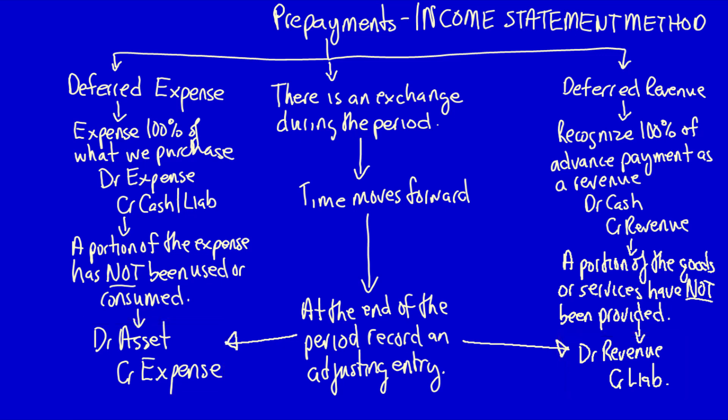This often seems counterintuitive to students and they have a lot of problems with the income statement method, but it's a totally acceptable method. At the end of the period, regardless of whether you use the income statement method or the balance sheet method, both methods result in the same balance on the statement of financial position and the income statement. There is no difference in the published financial statements regardless of which method is used.